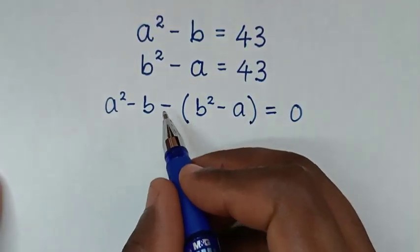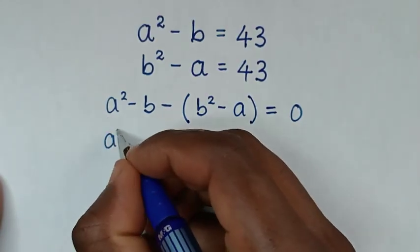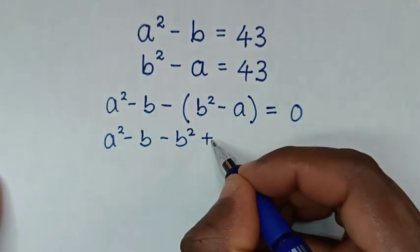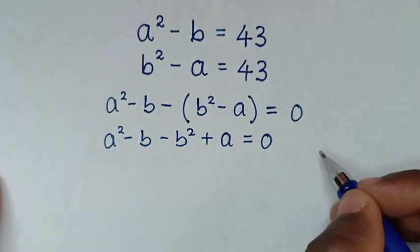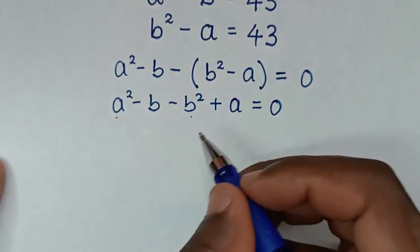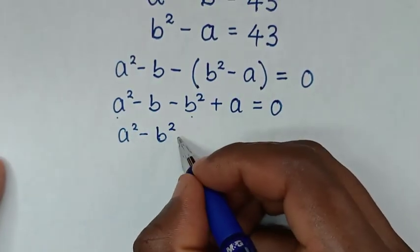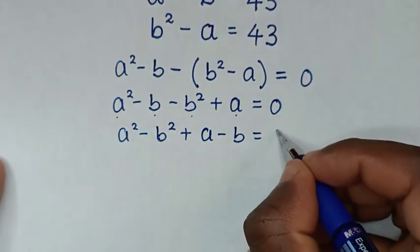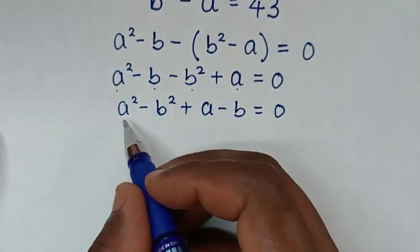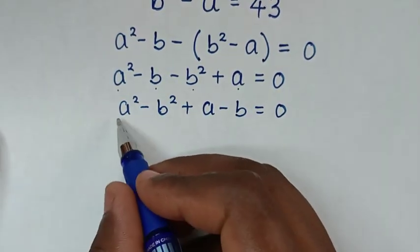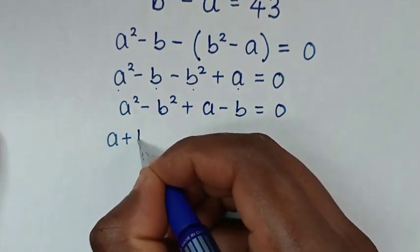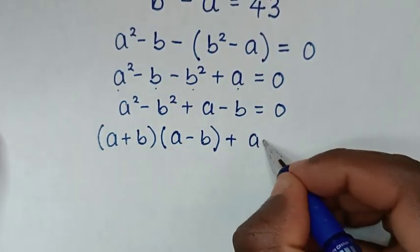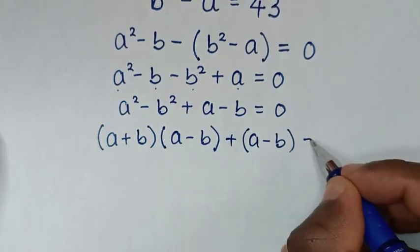We will open the bracket using the negative sign. So it will be a squared minus b, then negative b squared — negative and negative gives positive — plus a, is equal to 0. Rearranging, we have a squared minus b squared, plus a minus b, is equal to 0.